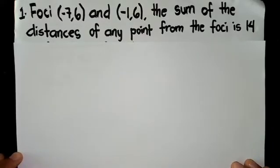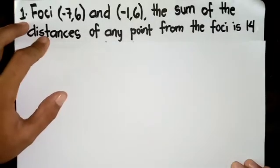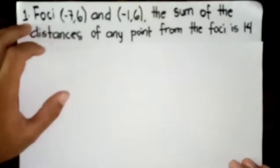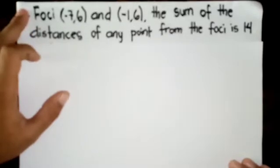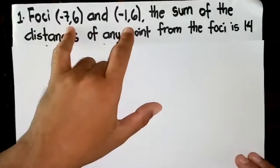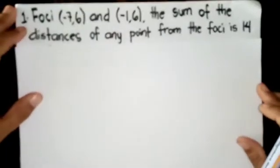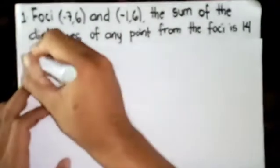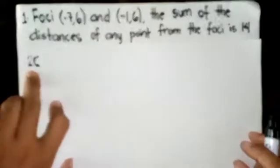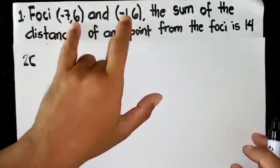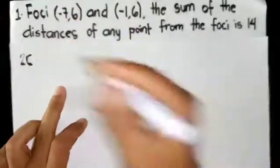So number one: foci (-7,6) and (-1,6), the sum of the distances of any point from the foci is 14. In finding the equation of the ellipse, the most important thing is analysis. Since the conditions vary, all you need to do is to analyze it clearly. So number one, let us analyze. Given are the foci - there are two foci. If you could recall, the distance from focus to focus is 2c. So if you have 2c, equate it to the distance between these points. How do you get the distance? Use the distance formula.